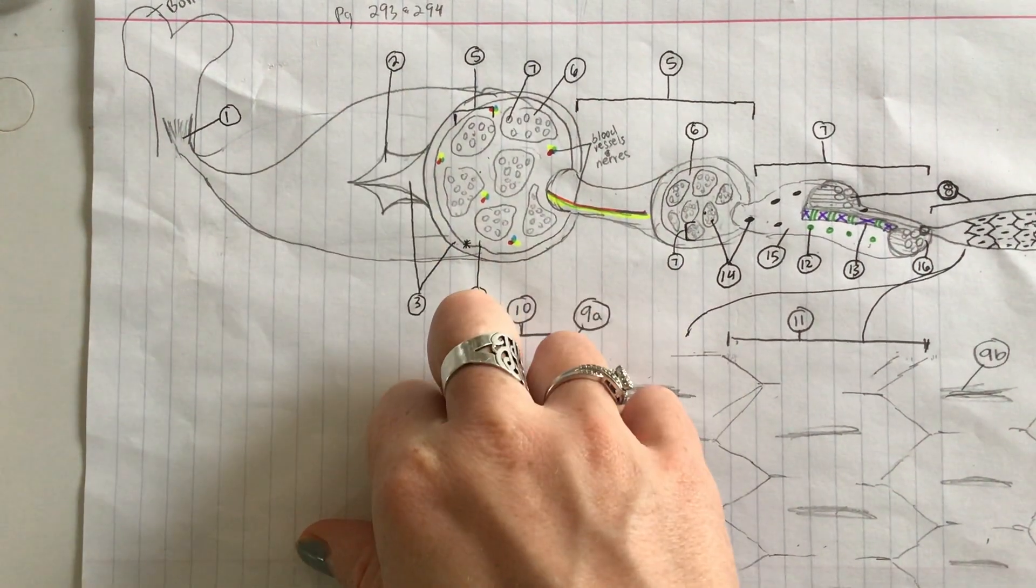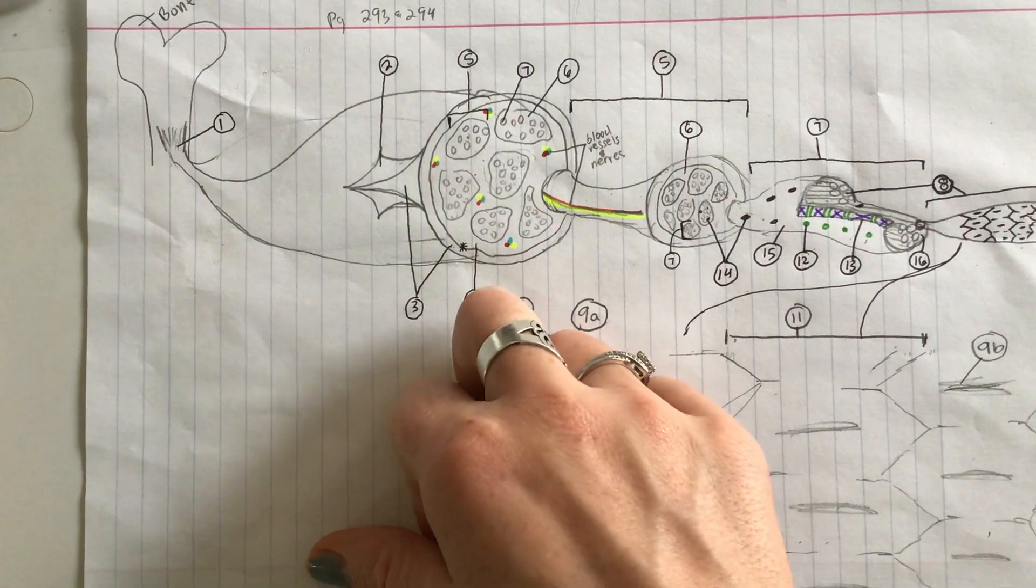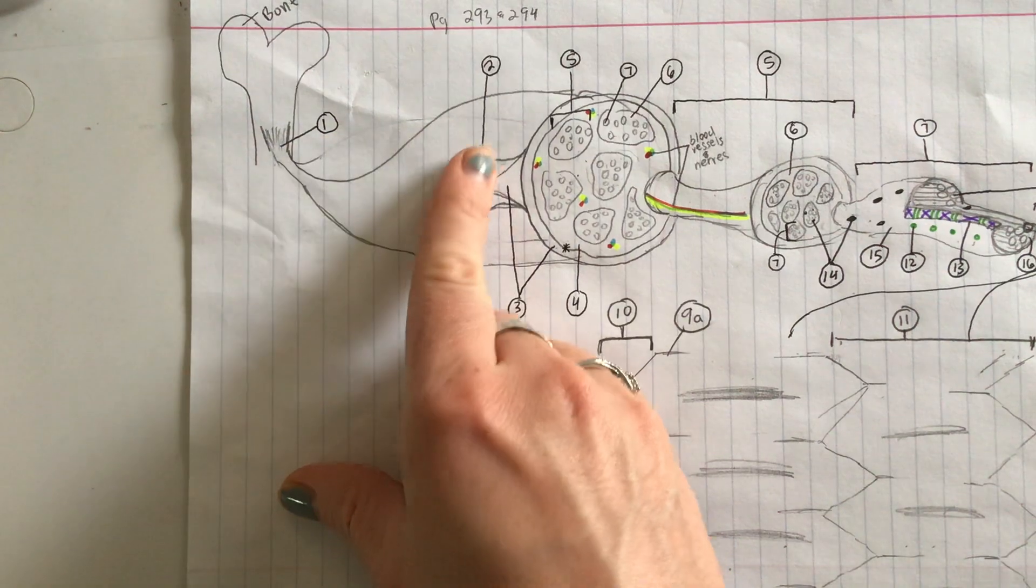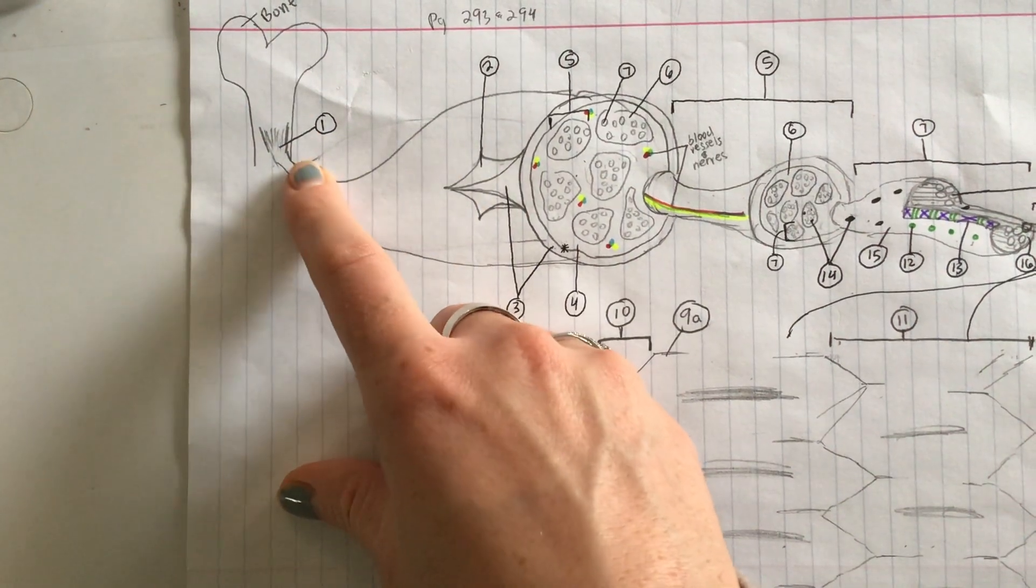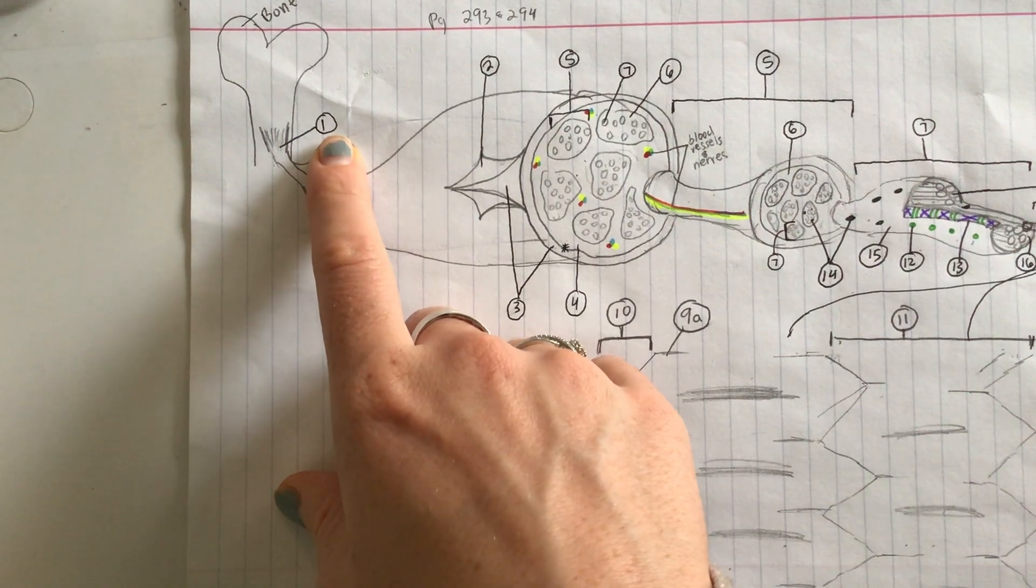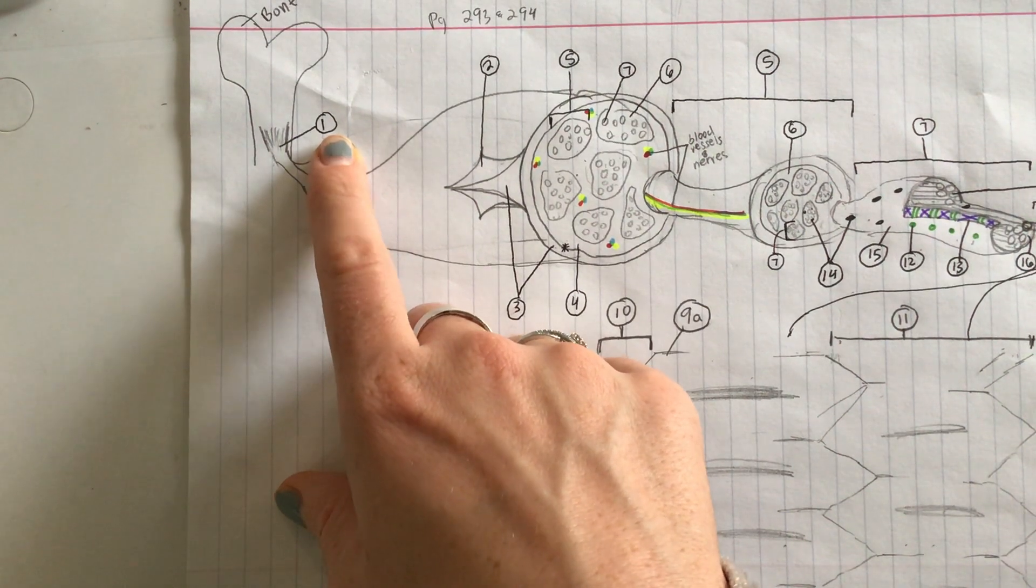And finally, number 1 over here fuses with number 2, fuses with that fascia, and connects this muscle to our bone. What is number 1? It is a tendon.